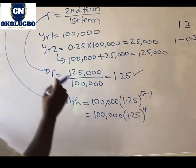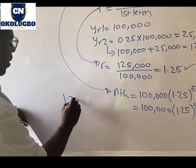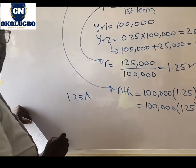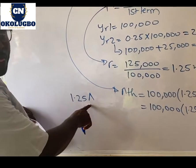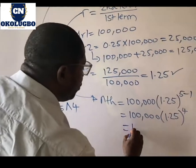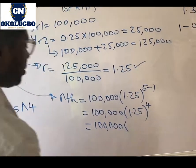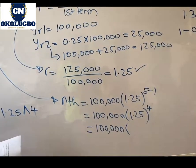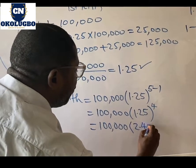Now solve this with your calculator. What you punch in your calculator will be 1.25 exponential - look for this sign in your calculator - exponential 4. And what you should have is 100,000 times 2.44, approximately 2.44.